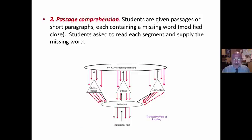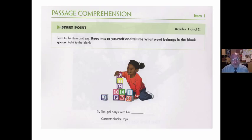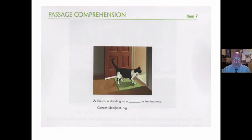Does it reflect students' ability to create meaning with print? The second part: passage comprehension. I'm okay with this. Students are given a passage or short paragraphs, each containing a missing word. Students are asked to read each segment and supply the missing word. This has to do with meaning making. This makes the most sense to me. 'The girl plays with her...' Your brain has to make sense of that. Passage comprehension.